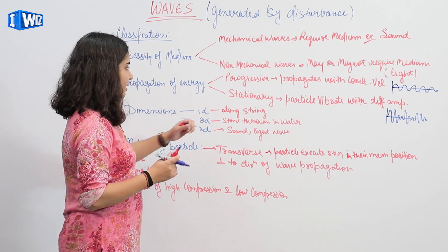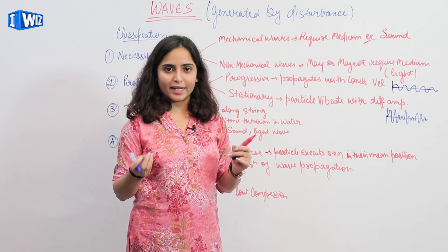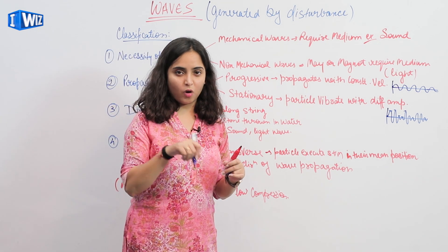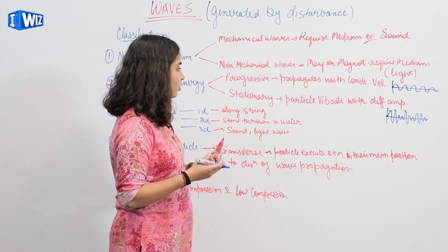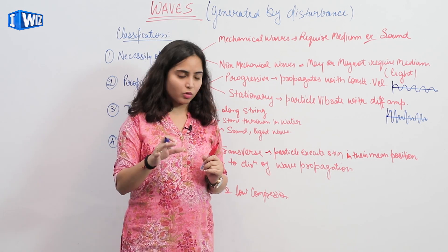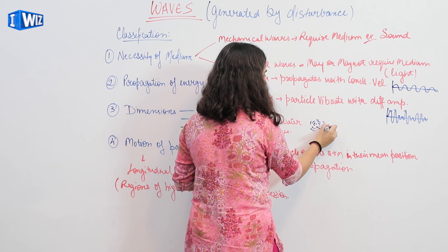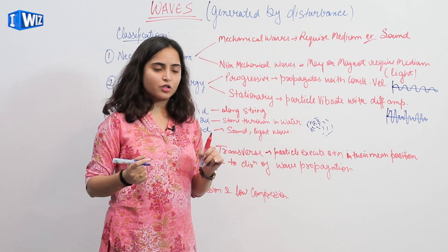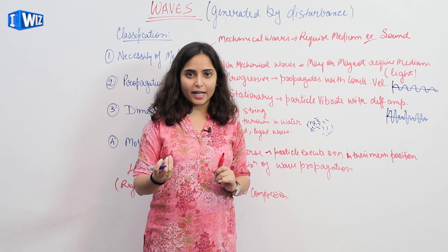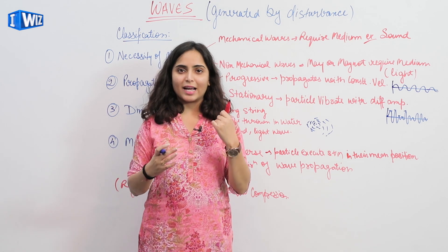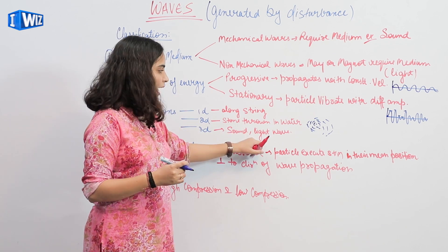Third, dimensions: 1D, 2D, and 3D. One-dimensional waves travel along a string — when we take a string and pluck it, the wave formed is a 1D wave. Two-dimensional: a stone thrown in water produces a 2D wave pattern. Three-dimensional: when a source emits waves in all x, y, and z axes — example: sound and light.